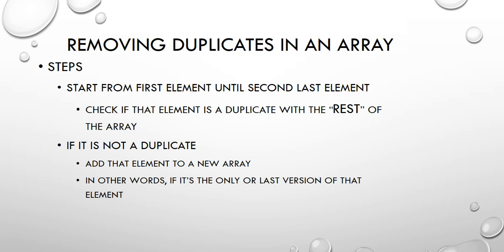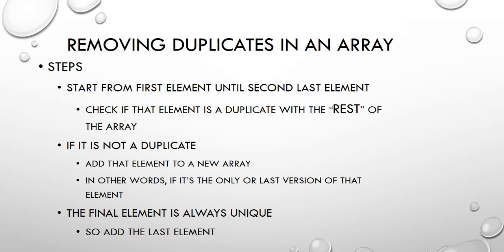That's why we only go to the second last element with our initial loop. When we get to the final element, there is nothing for us to check with the rest of the array because it is the last element - so that element will always be unique. We will add that to our unique array, our array with no duplicates.